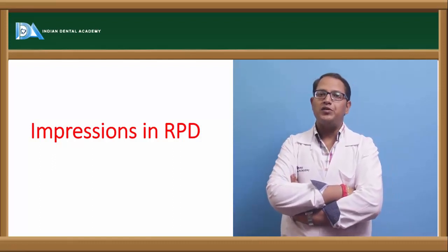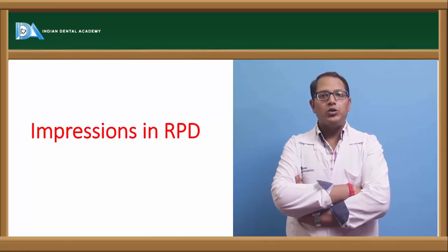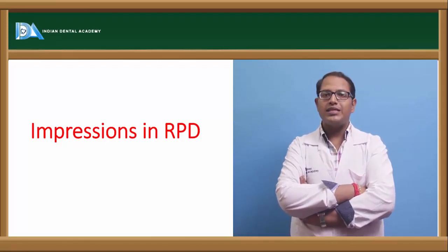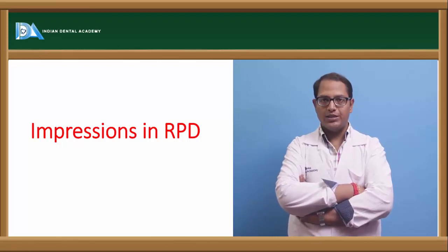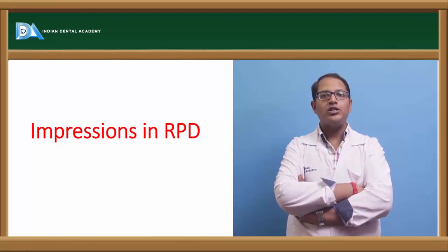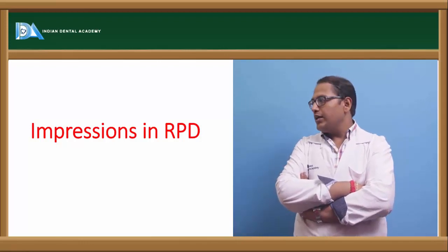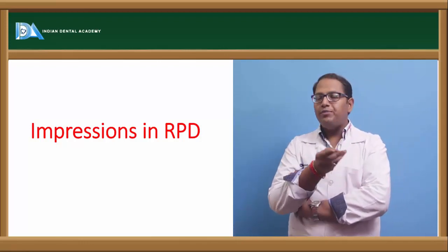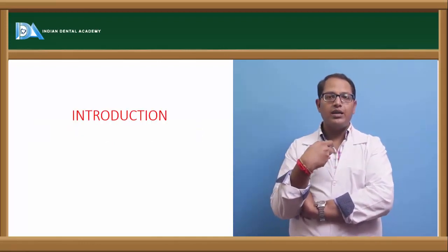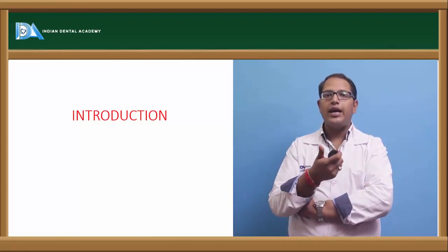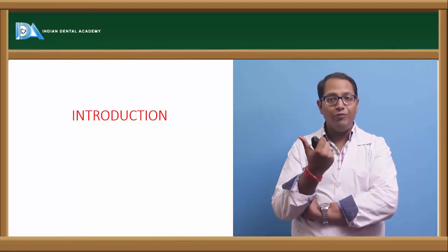Hello everyone. The topic we will see now is impressions in RPD. We know that removable partial dentures can be of two types: tooth supported or tooth tissue supported, based on the different classifications of Kennedy and modifications given by Applegate. Impressions in RPD have to be relevant to our classification and should serve the purpose of removable partial denture fabrication.